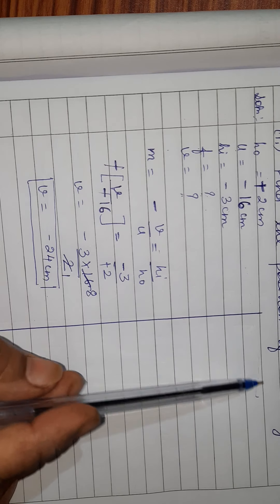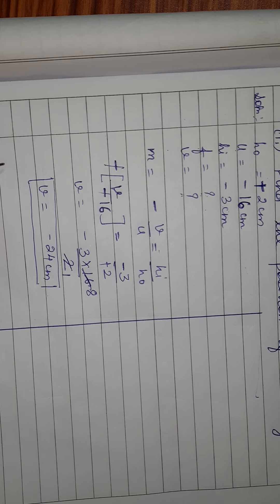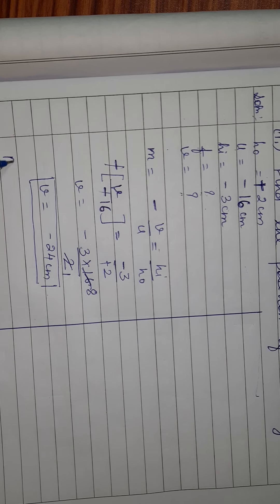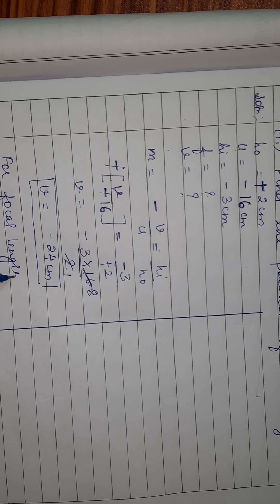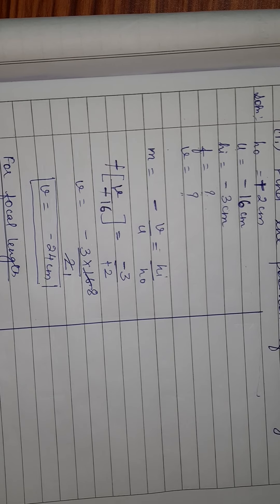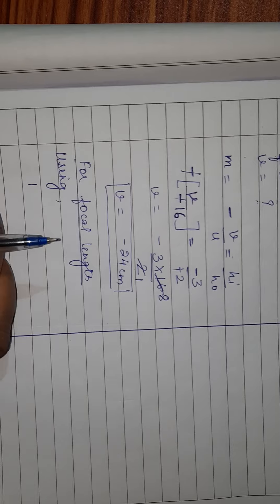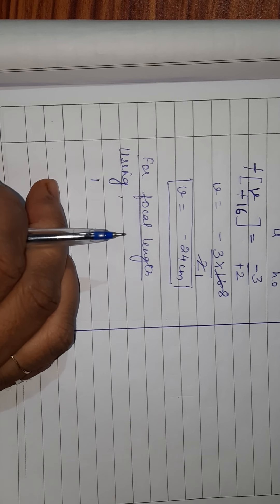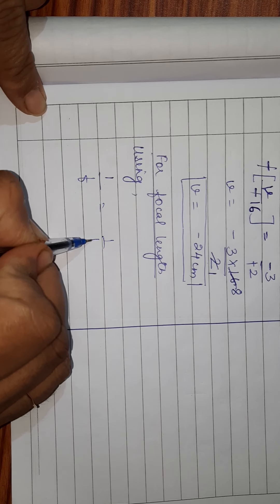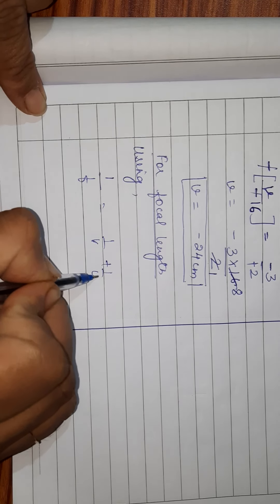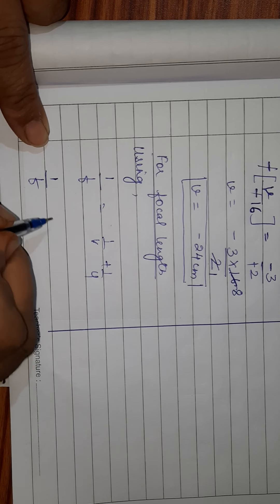We have found the position of image as minus 24 centimeter. Next we will find the focal length using the mirror formula.